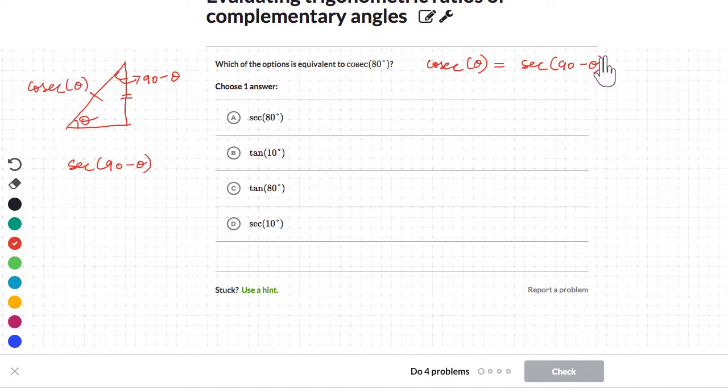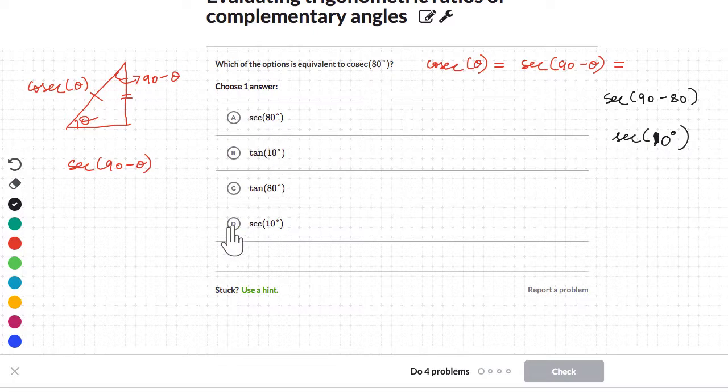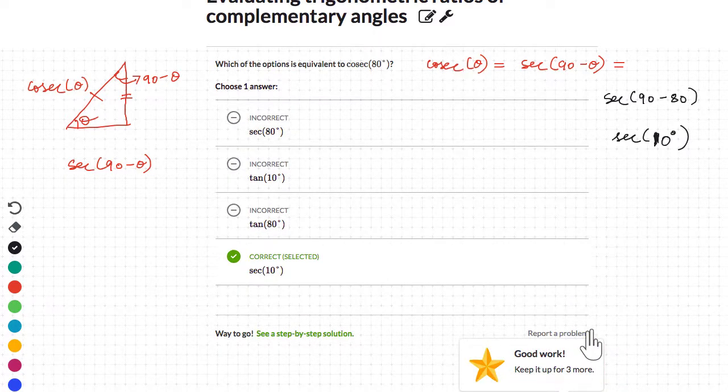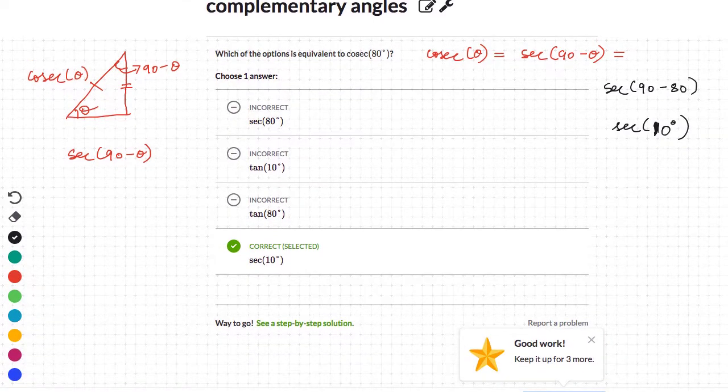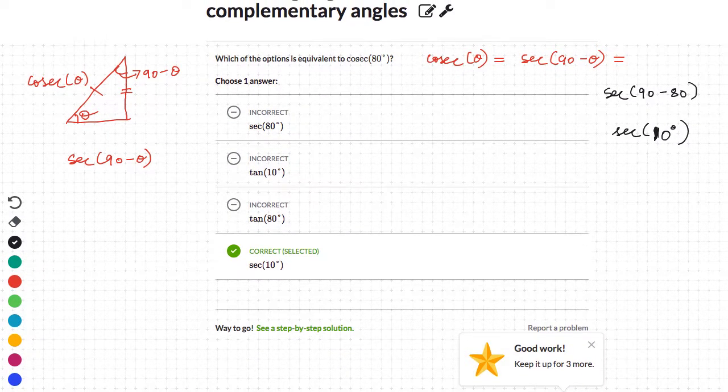And now that you know this, after this it simply becomes plugging the value of theta and finding what it should be. So secant of 90 minus 80 in this case, and you get secant 10 degrees. Secant of 10 degrees. And there is an option that says secant 10 degrees. So let's select that and let's check. That's right, keep up the good work. Now let's go to the next question.